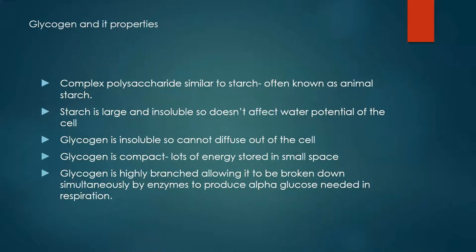Glycogen is very similar to starch and is often referred to as animal starch. It is very insoluble and does not affect the water potential of the cell. Glycogen cannot diffuse out of the cell and is very compact, therefore storing a lot of energy in a small space. It is also highly branched, allowing it to be broken down simultaneously by enzymes to produce alpha glucose for respiration. This branching provides a very large surface area for the rapid breakdown of glycogen.